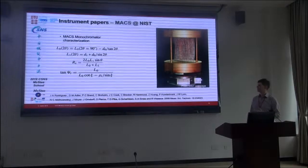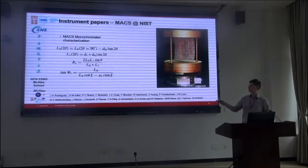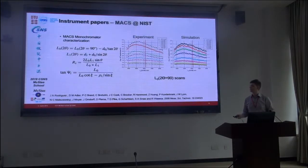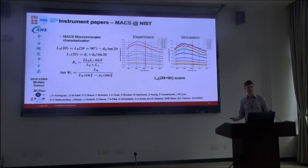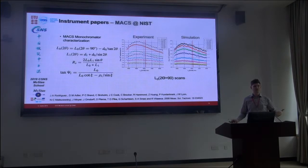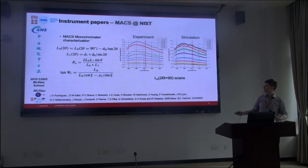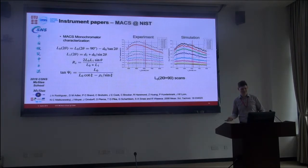There are also papers about the MACS instrument at SNS, discussing the design of the very complex monochromator, and the equations governing angles and positions. They did experiments and simulations to check whether these equations gave the best monochromator parameters. It turned out they didn't — the analytical solution suggested one value, but both simulation and experiment showed the parameter should be set a little lower. They could have avoided the experiment had they trusted the simulation from the start.